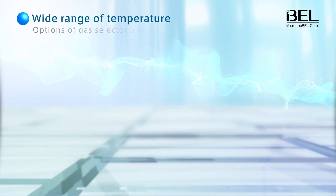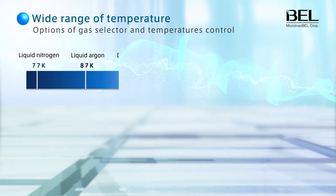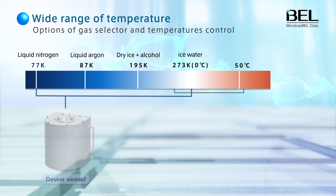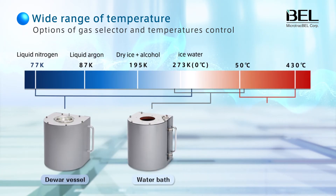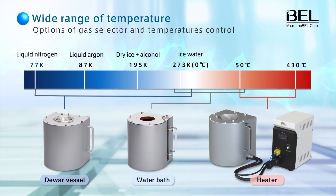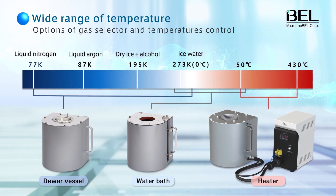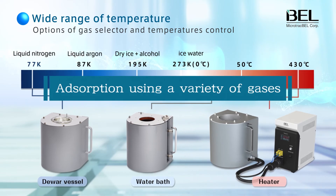Using a Dewar vessel, a water bath, or a heater gives you a wide measurement temperature range from 77 Kelvin to 430 degrees centigrade. And by combining the Belsorp Mini-X with a gas selector, a wide variety of gases can be used.